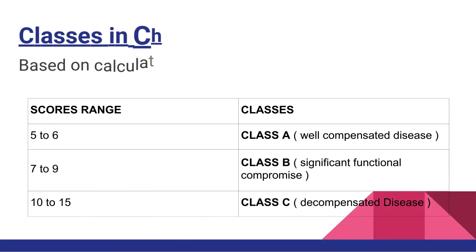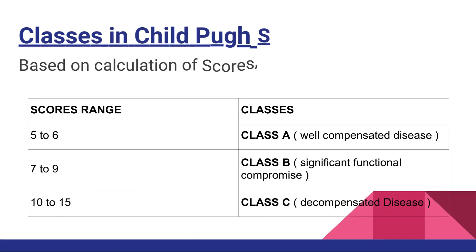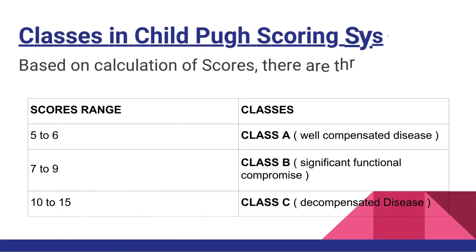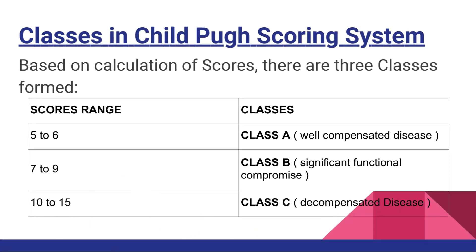Based on calculation of scores, there are three classes formed. Class A shows a well-compensated disease. Class B shows a significant functional compromise. Class C shows a decompensated disease.